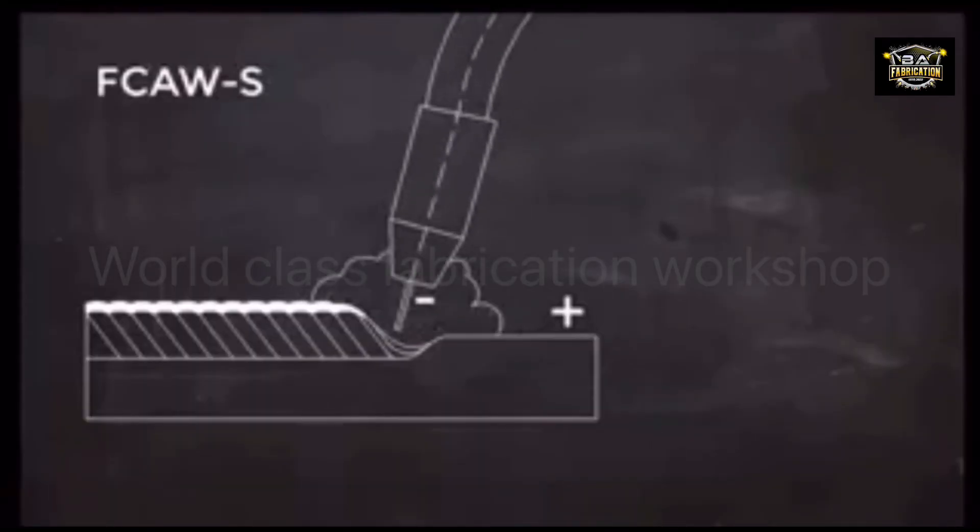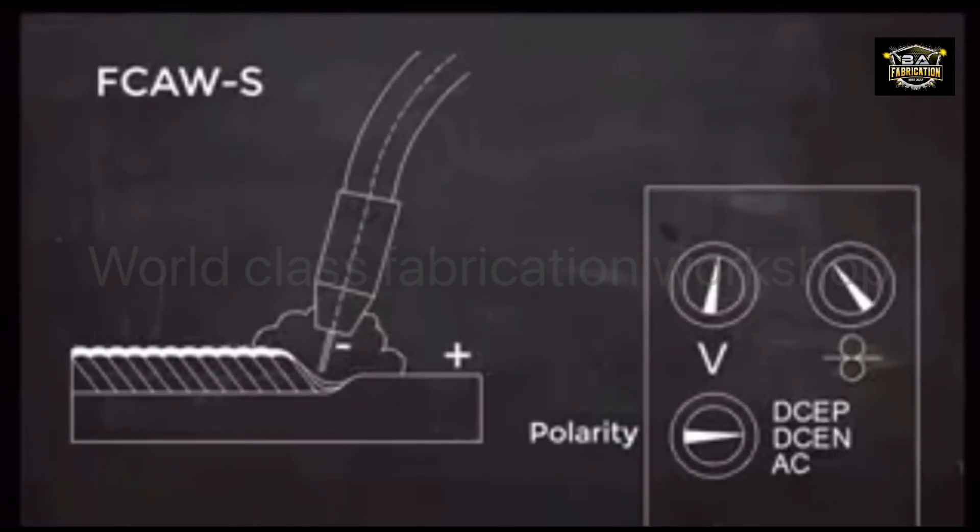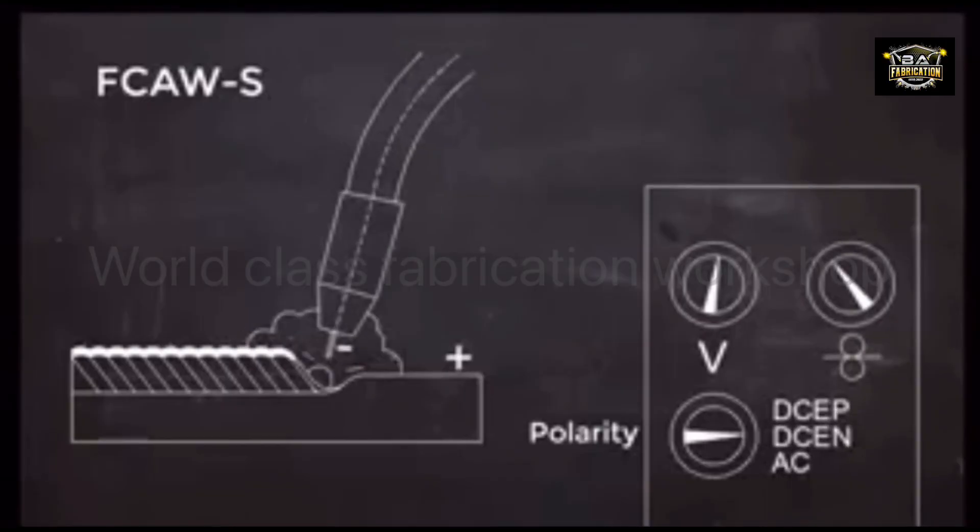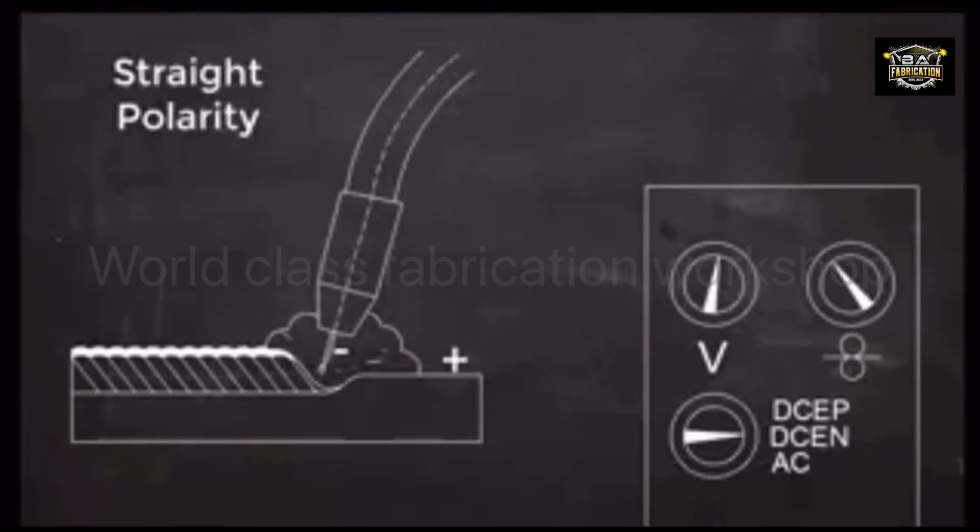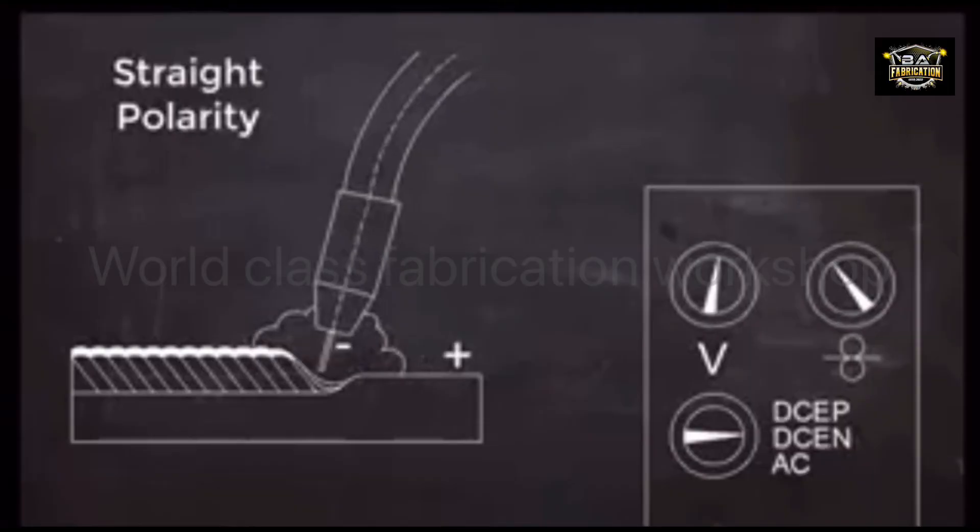In self-shielded flux-core welding, the electrode is usually negative, and the workpiece is positive. The term DCEN is used for this, indicating that the current is DC and the electrode is negative. You might also hear this called straight polarity.